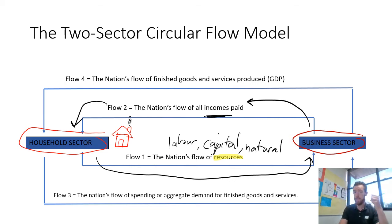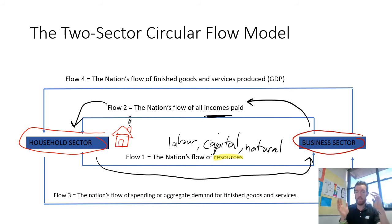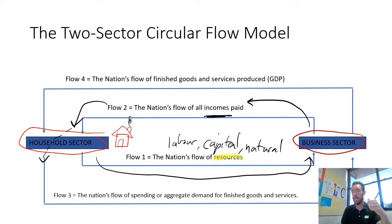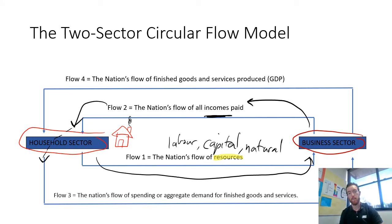If you provide a resource to a business, what do they do in return? They pay incomes back to those households. No matter what resource you provide, you will get some kind of income in return — this could be wages, rent, or dividends. When the household sector receives that income, they start demanding goods and services: buying groceries, paying bills, and so on. This creates the overall flow of spending or aggregate demand for finished goods and services, which flows back to the business sector.